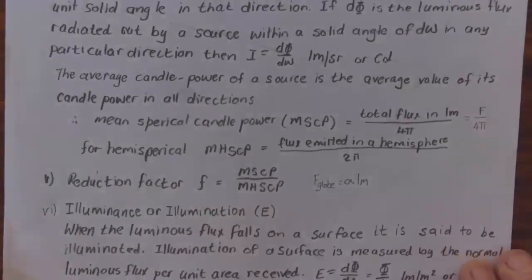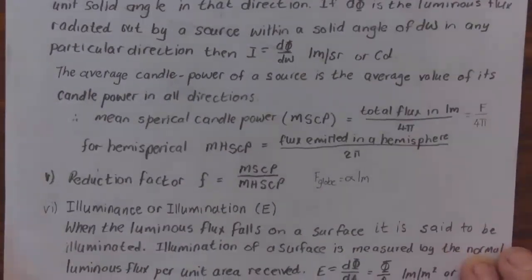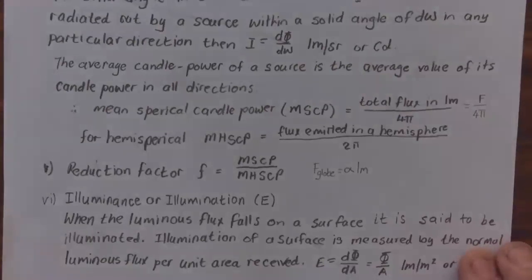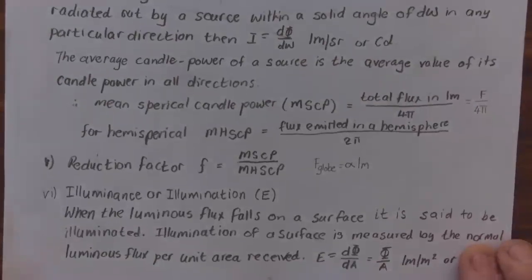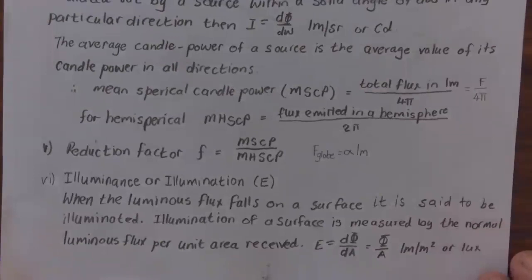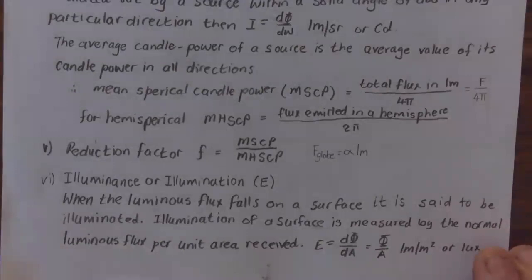The average candle power of a source is the average value of its candle power in all directions. The mean spherical candle power is the total flux in lumens divided by 4π, which is F/4π. For hemispherical flux emitted in a hemisphere, it is divided by 2π. The reduction factor f is the mean spherical candle power divided by the mean hemispherical candle power.